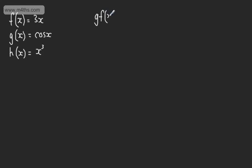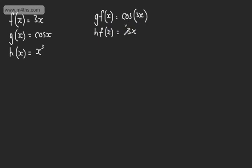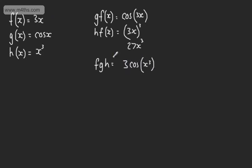We might be asked to find g of f of x — do f first, then g — giving cos(3x). For h of f of x, do f first then h: take 3x and cube it, giving 27x³. For f of g of h of x, do h first, then g, then f: giving 3·cos(x³).